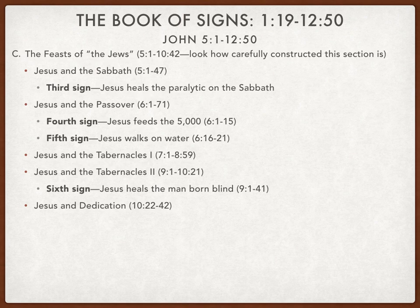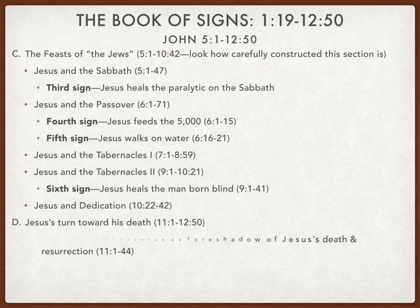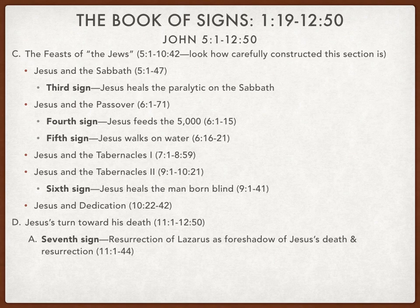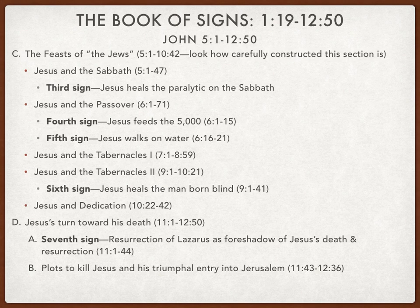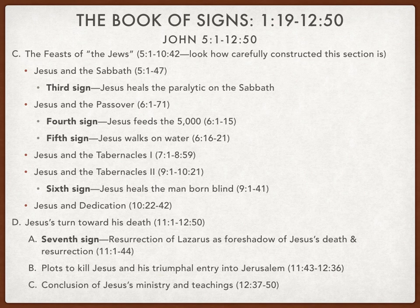In the last section of the Book of Signs, Jesus turns toward his death. This is where you get the seventh sign — all these signs are progressive — and the seventh one is where he raises Lazarus from the dead. It foreshadows Jesus's own death and resurrection and is a major turning point in the Gospel. The Book of Signs ends with the resurrection of Lazarus, and from that, of all things, people begin to plot to kill Jesus. Then there is the triumphal entry, and chapter 12:37–50 serves as a conclusion of Jesus's ministry and teachings.